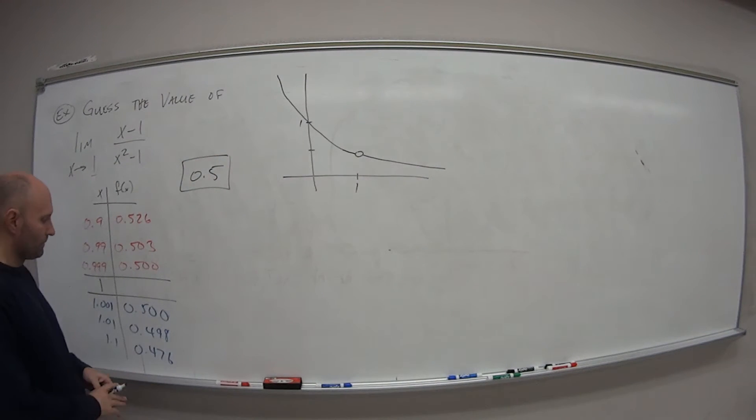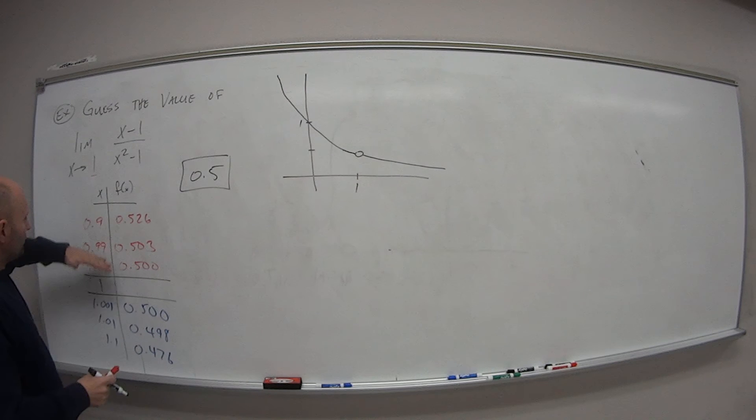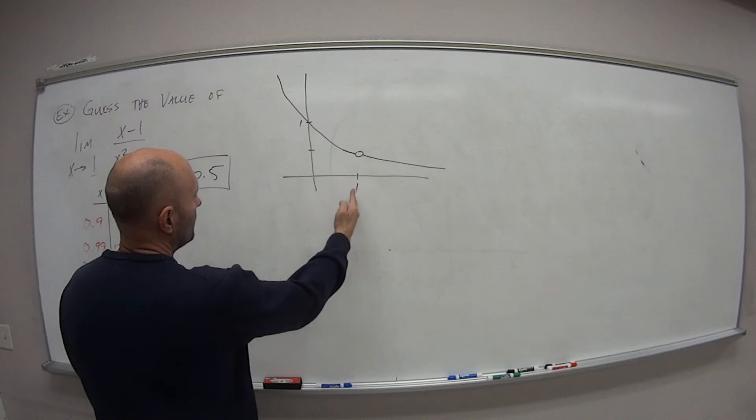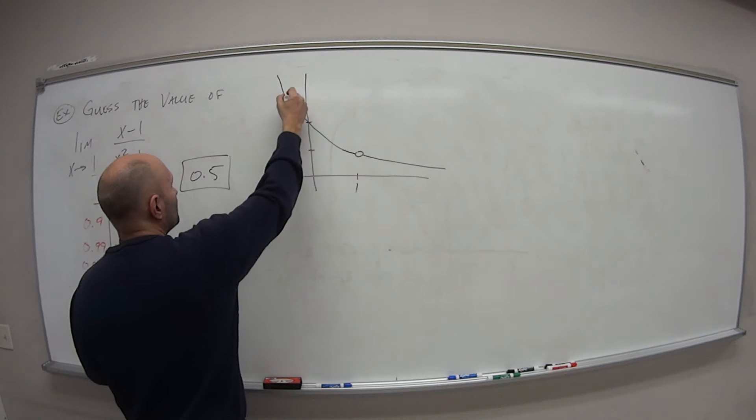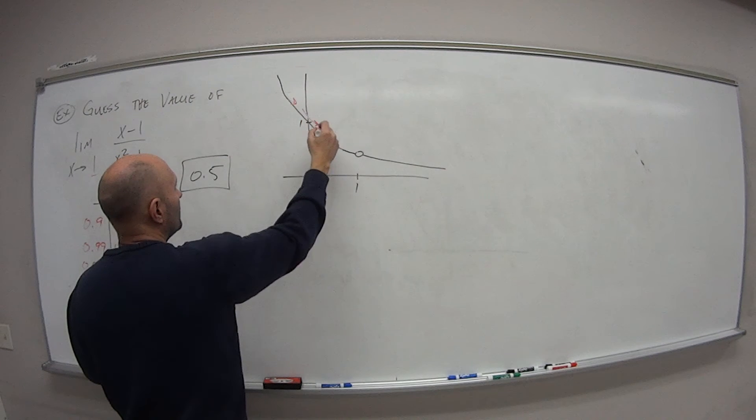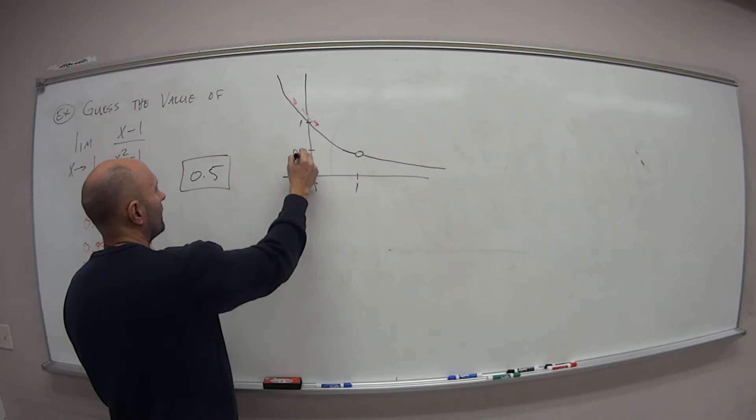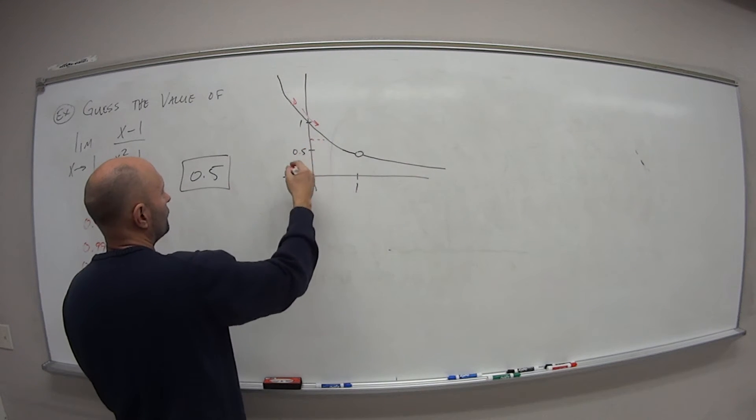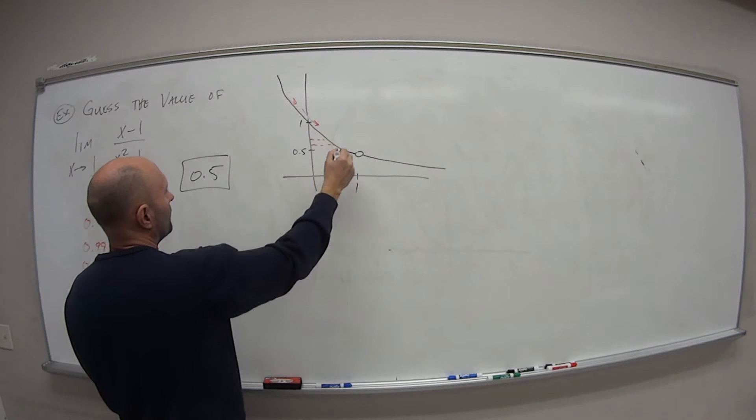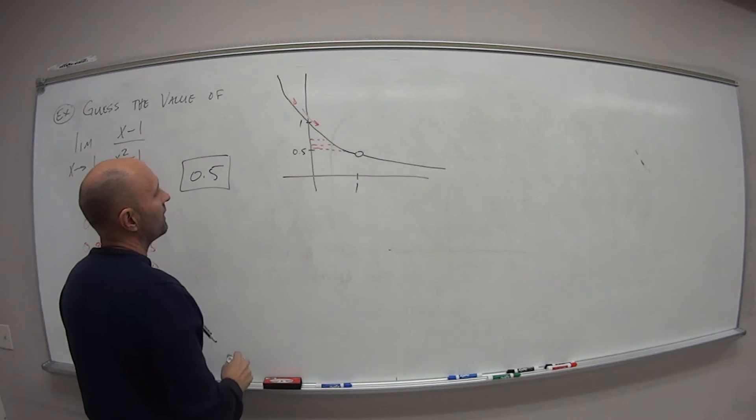So what do these numbers mean on the table versus the graph? Well as I get closer and closer to x from the left hand side, from over here, what happens? So this guy here is 0.5. I come down getting closer to 0.5, closer to 0.5, closer to 0.5.